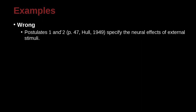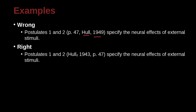Postulates 1 and 2 (p. 44, Hall, 1949) specify the neural effects of external stimuli. In this case, we have the author and year, but the page is in the wrong position. You need: author, comma, year, comma, page. Pay attention: space after the comma, space after the period for 'p.' It should be 'p. 47'. If it were two pages, like 47 to 48, then you would use 'pp. 47–48'.